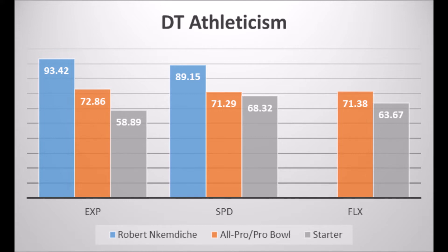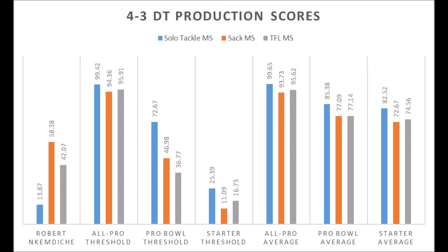But when you look at his production, he had a 13.87 solo tackle score, a 58.38 sack score, and a 42.07 tackle-for-loss score. You might look at those sack and tackle-for-loss scores and think he wasn't that bad, but his solo tackle data was nowhere near where it needed to be. There has never been a long-term starter with a solo tackle score of 25.39 or less — and he had a 13.87.